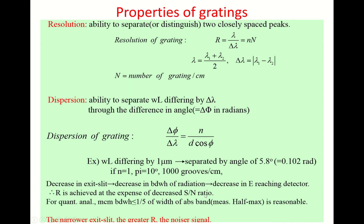Resolution is achieved at the expense of a decreased signal-to-noise ratio. If you want a clean spectrum, open the exit slit wide but sacrifice resolution. If you want high resolution, narrow the exit slit but accept a noisier spectrum. For quantitative analytical measurement, a bandwidth equal to or less than one-fifth the width of the absorption band is a reasonable guideline.